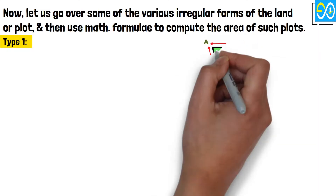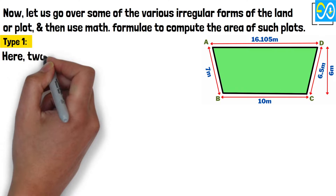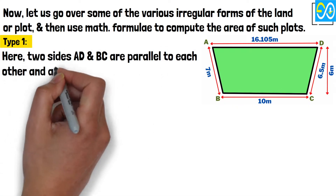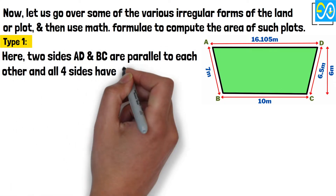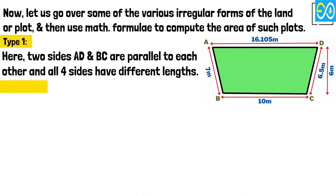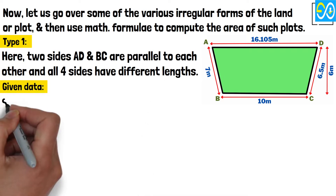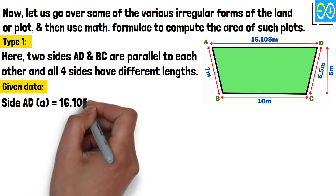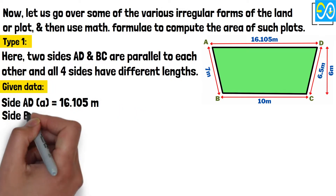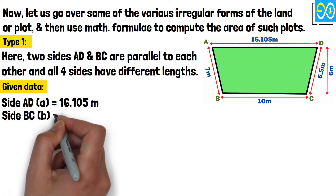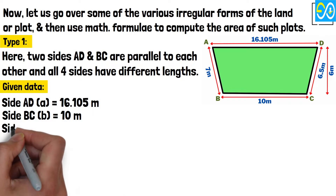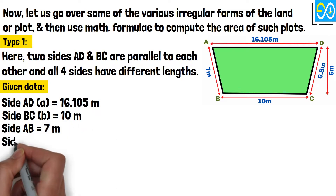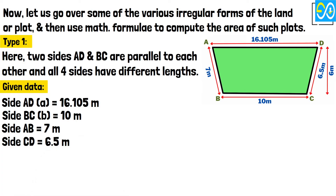Type 1. Here, two sides A, D and B, C are parallel to each other and all four sides have different lengths. Given data: Side A, D equals 16.105 meters. Side B, C equals 10 meters. Side A, B equals 7 meters. Side C, D equals 6.5 meters.